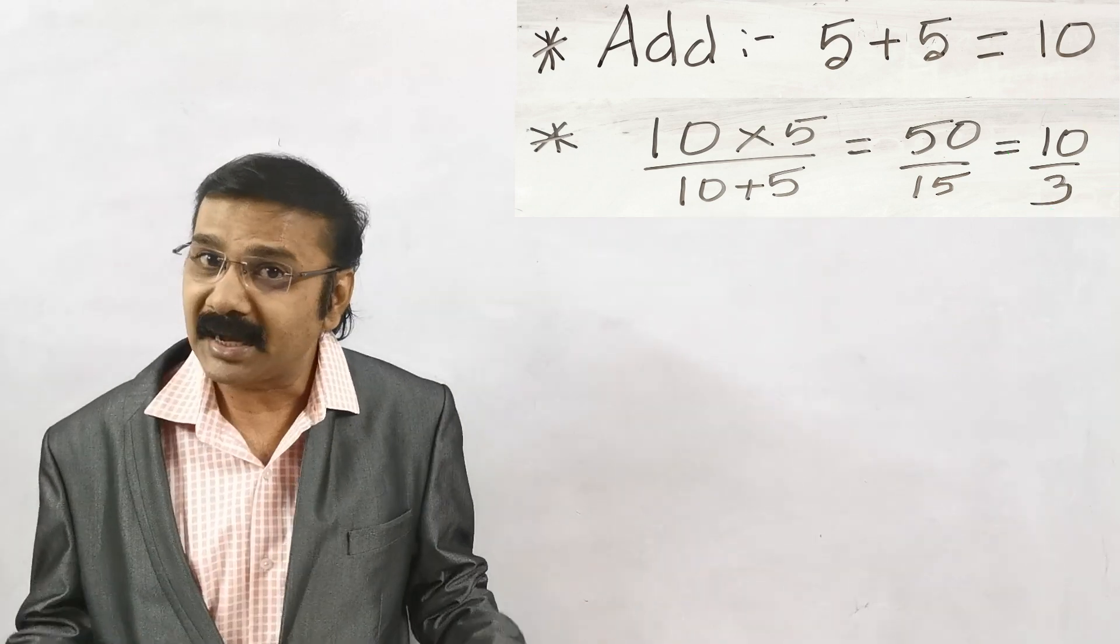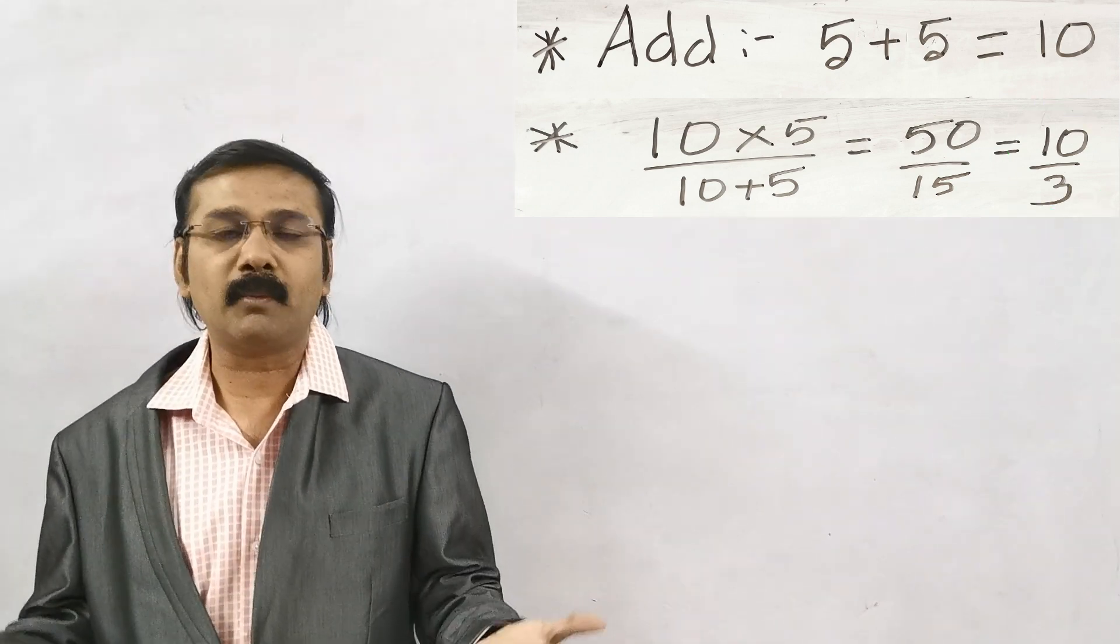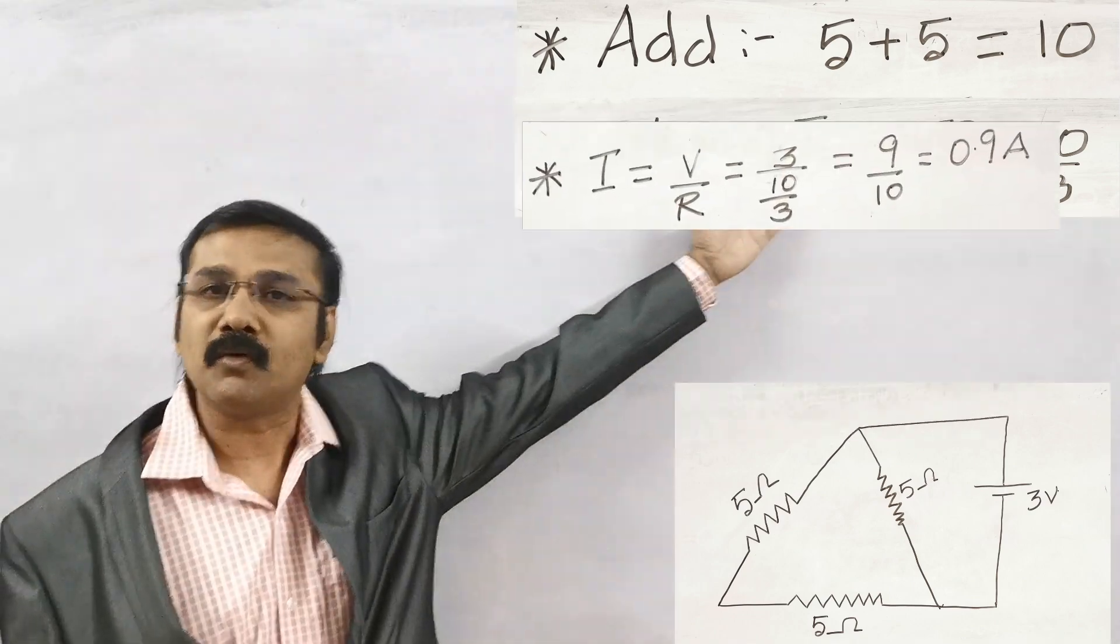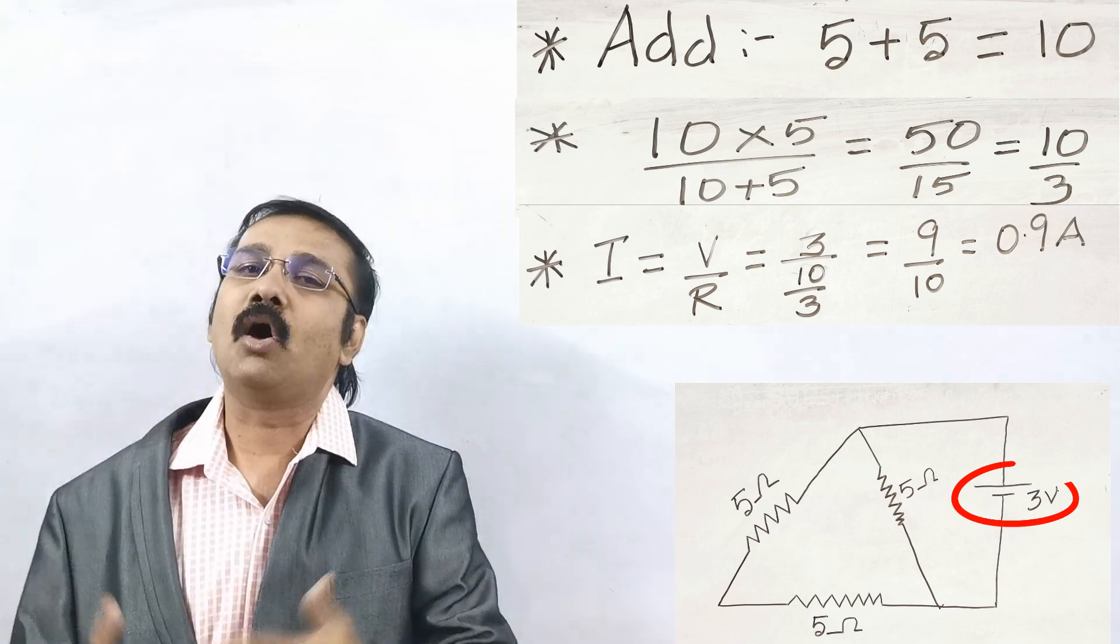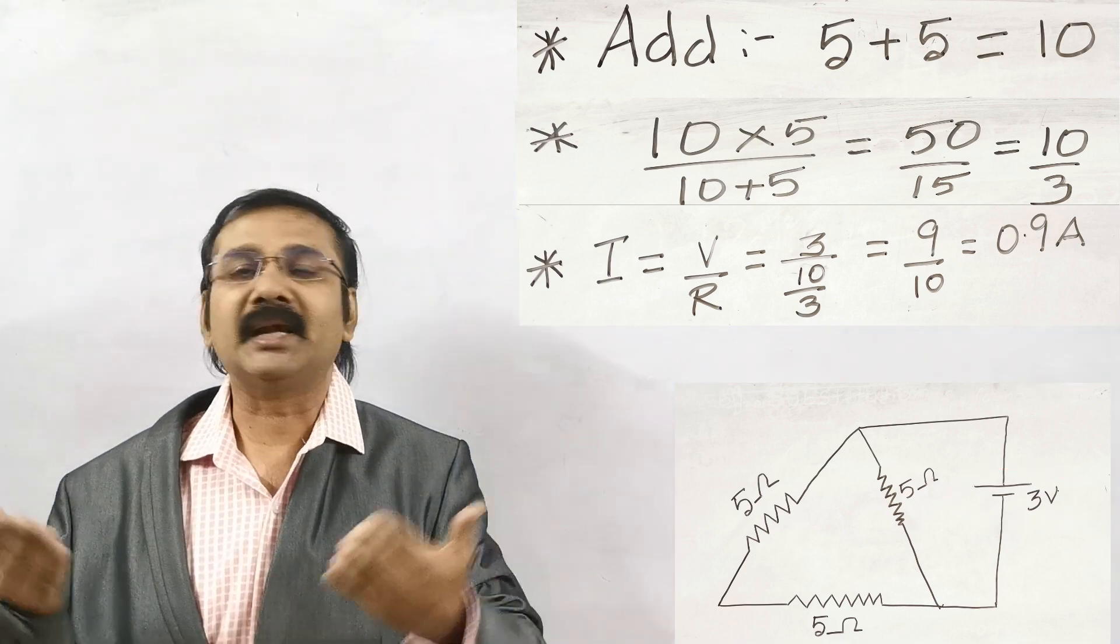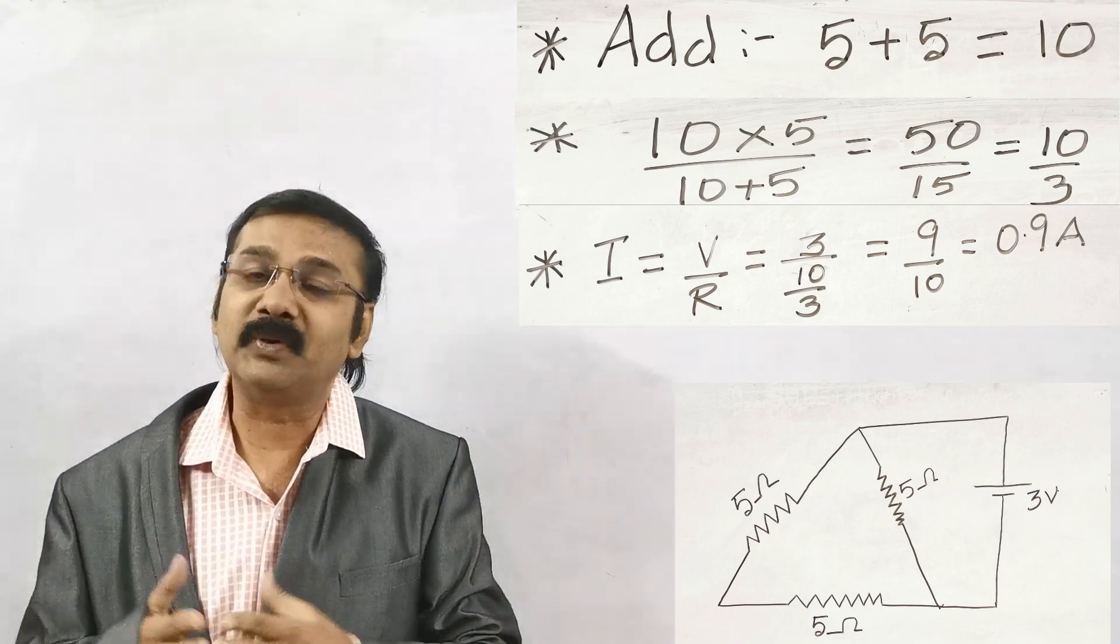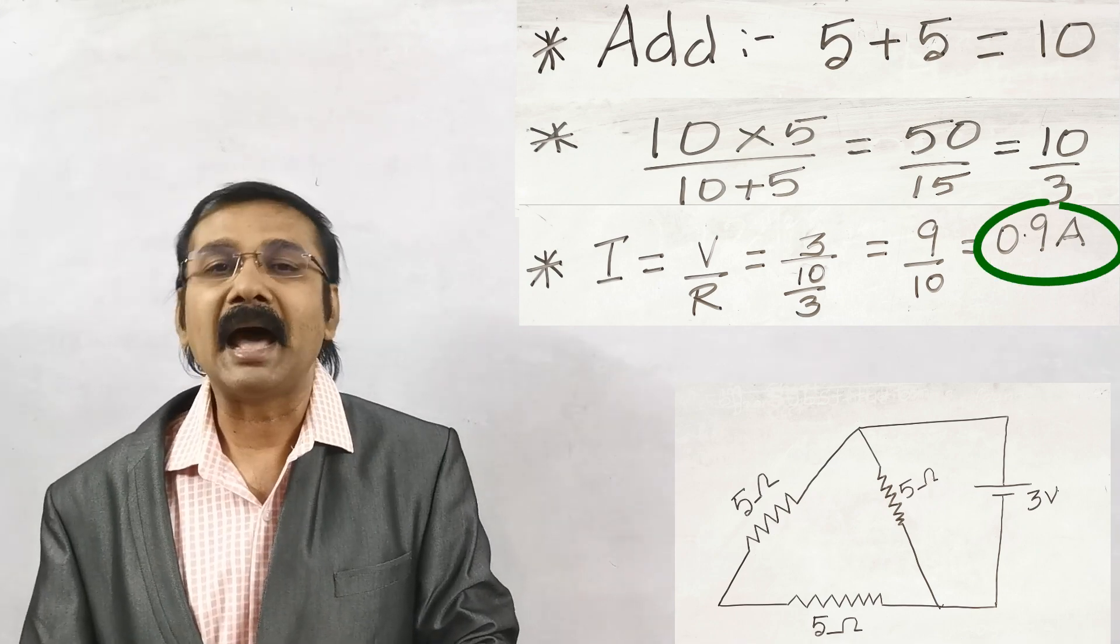What the question asks is to find the current. By Ohm's law you know the formula, I is equal to V by R. If you substitute the voltage value of 3 and the R value of 10 by 3, you get 9 by 10 which ends with 0.9 ampere.